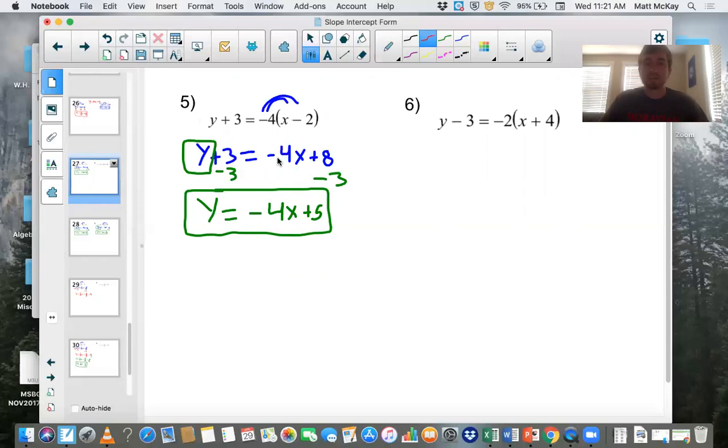Now from this spot here in blue, this line here, it's the same as the previous four problems. Box in the variable, get rid of everything else next to it on the same side of the equal sign. Do the opposite operation instead of add three, subtract three. We get y by itself, negative four x, positive eight minus three is positive five. This will be the final answer.